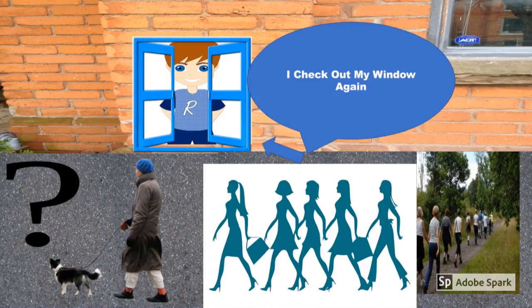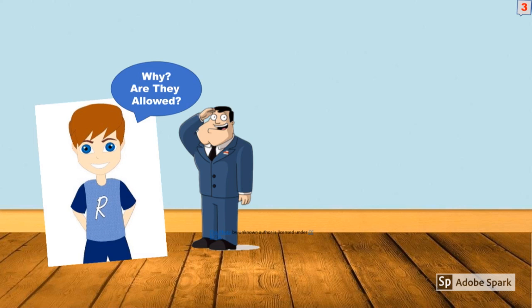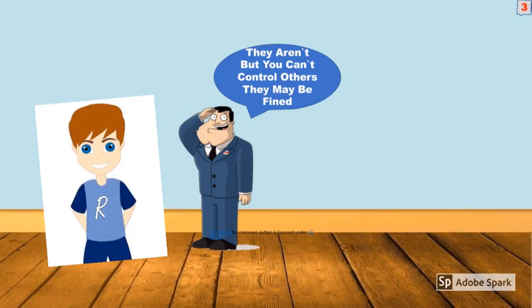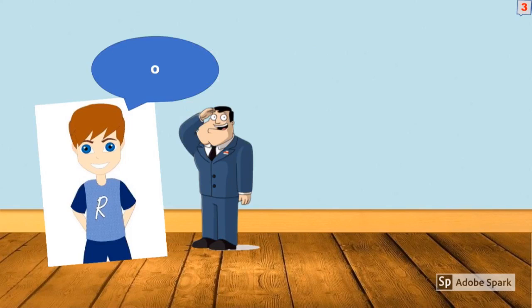I check out my window again. Still people out together. Why are they allowed, Dad? They aren't but you can't control others. They may be fine. Okay, Dad.